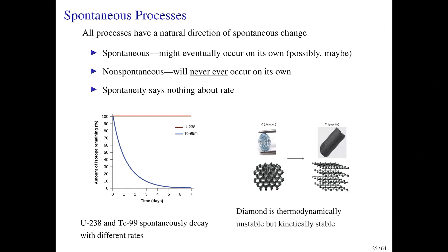It appears that for any given process you might consider, there's a natural direction of change and an unnatural direction of change. The definitions that we're working with here—you'll see for the spontaneous process it's a very soft definition in the sense that the spontaneous process is one that might eventually occur on its own if given enough time, possibly it could occur, maybe.